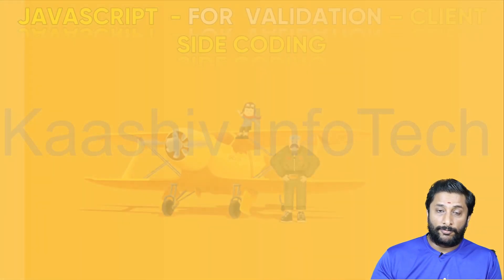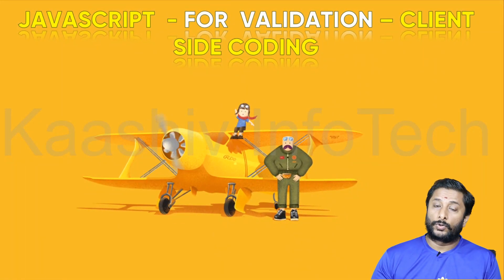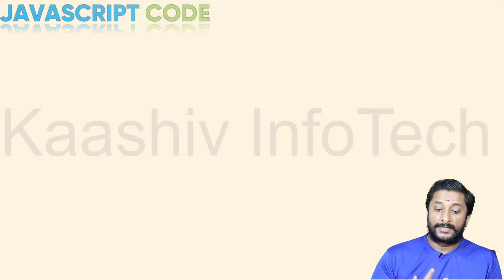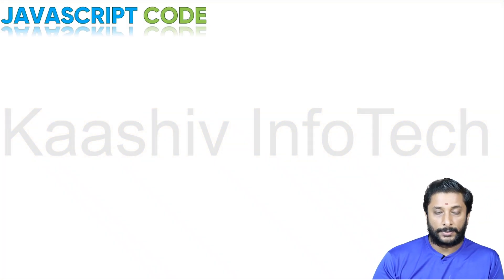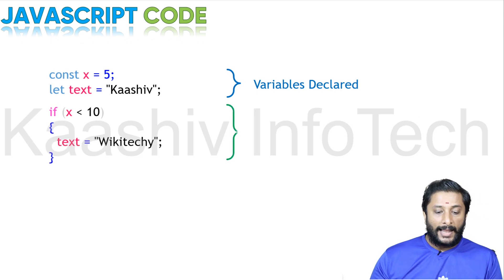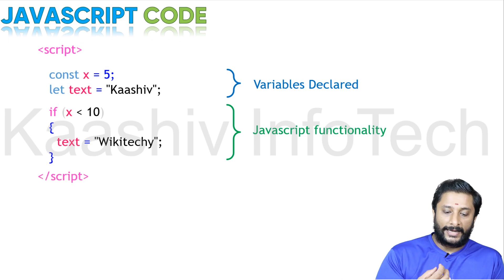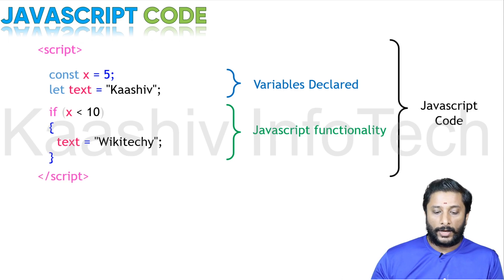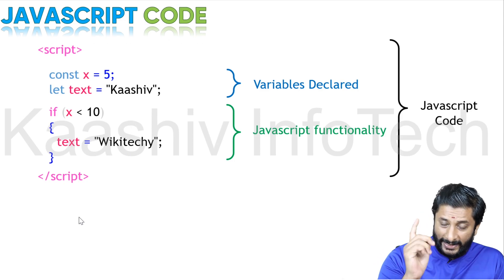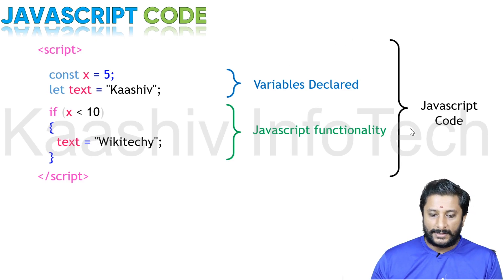I'm going to use the script tags to do a lot of manipulations with JSX coding. JavaScript is used for validations — client-side scripting can be done using JavaScript. Here is a simple JavaScript example: constant x is equal to 5, variable text is equal to 'Kashiv'. If x is less than 10 — 5 is less than 10, yes — the value of text is changed from 'Kashiv' to 'WikiTeki'. So the output is: text is 'WikiTeki'. This is a JavaScript functionality written inside the script tag.